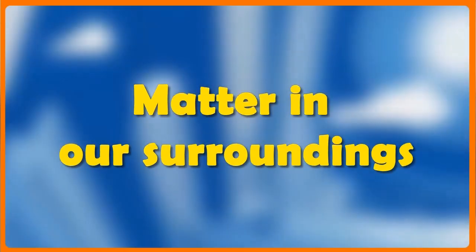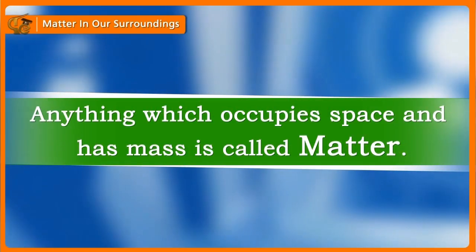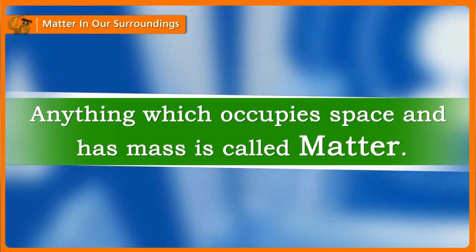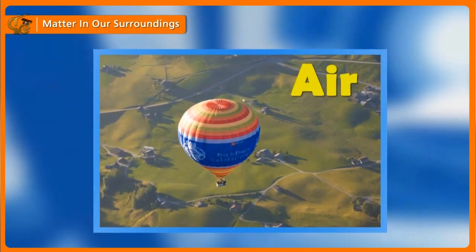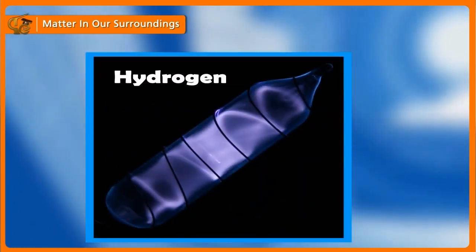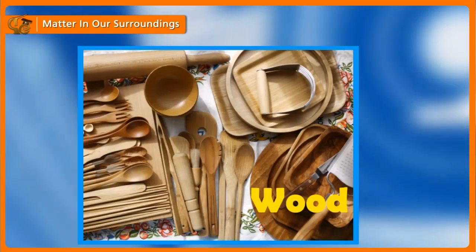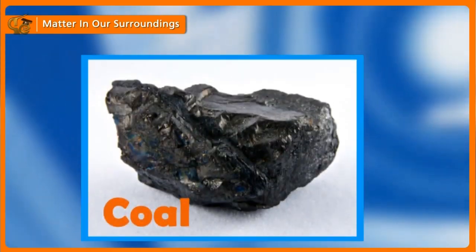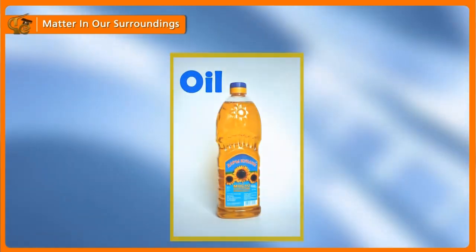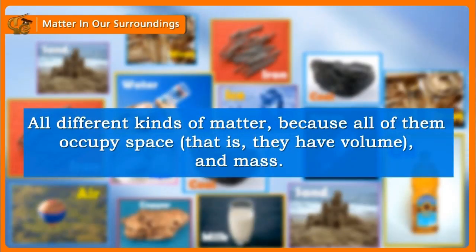Anything which occupies space and has mass is called matter. Air and water, hydrogen and oxygen, sugar and sand, iron and wood, copper and coal, ice and alcohol, milk and oil are all different kinds of matter because all of them occupy space and have mass.